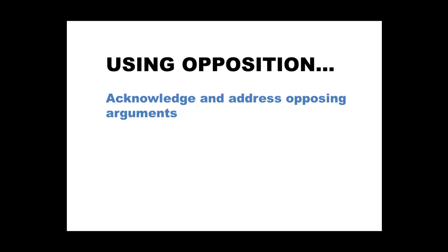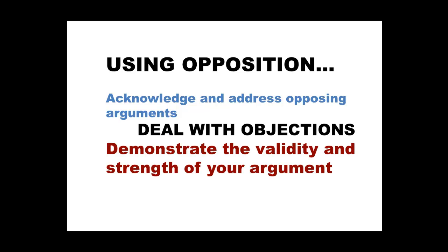Another method that will help to strengthen your argument is using opposition. This is when you refer to opposing arguments to show you have considered all aspects of the topic. If you acknowledge and address opposing arguments, you can deal with any objections, demonstrate the validity and strength of your argument, and enhance your credibility. Don't deliberately present the other argument in a dismissive way, but use it to show the reader that you have considered alternative arguments and further strengthen your own position.